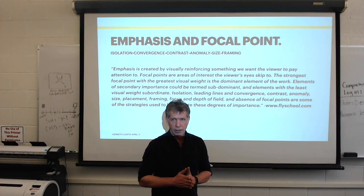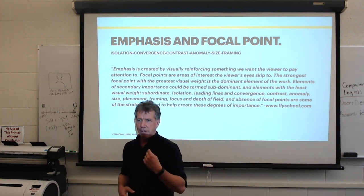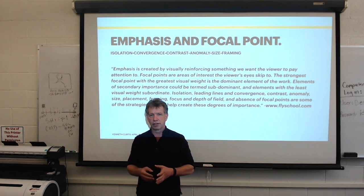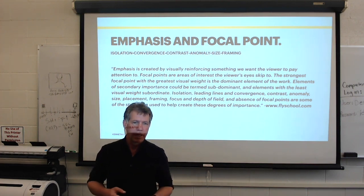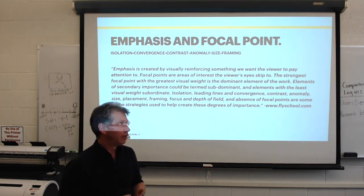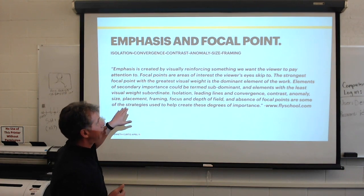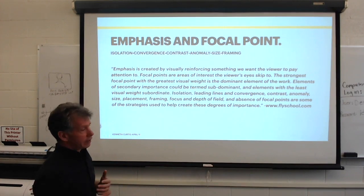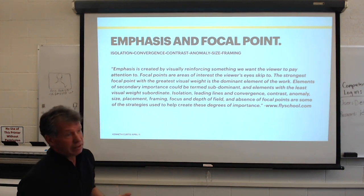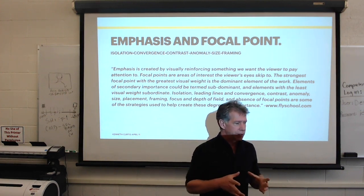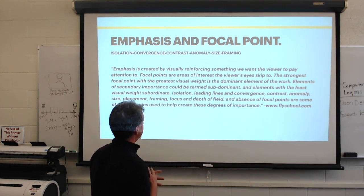Now there was a lecture earlier where I talked about that the nomenclature or the name that we give certain things can be modified a little bit depending on who's giving the lecture. For example, if you were to go online and look for emphasis, you might find the same information as what you see up here, but it might be called, instead of size, it'll be called scale. Contrast might be called something else. Convergence, they may do lines. Anyway, these are the basics of what focal point and emphasis and dominance is about.